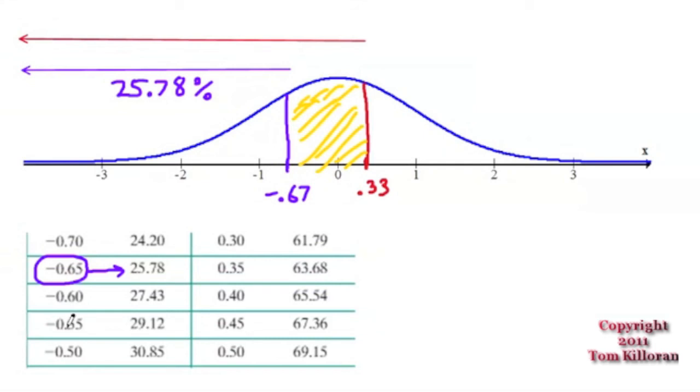The other number we're going to be looking up is 0.33. And 0.33 is somewhere between 0.30 and 0.35, but it actually is closer to 0.35. So the number associated with that, the percentile, is 63.68 percent.